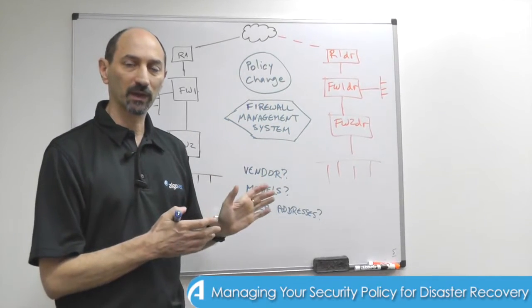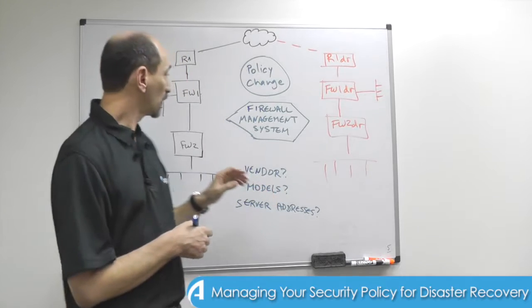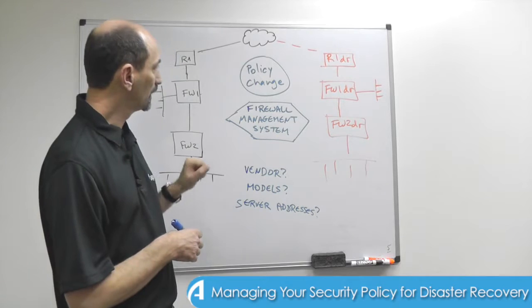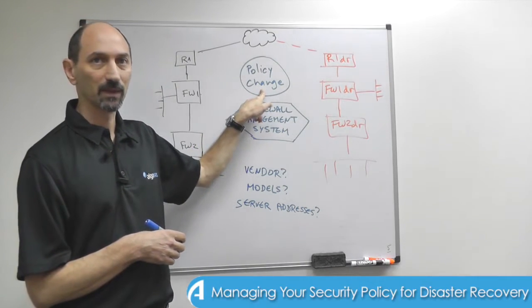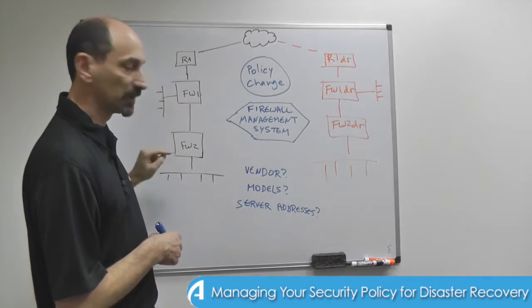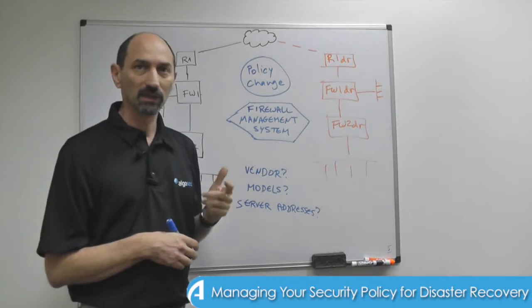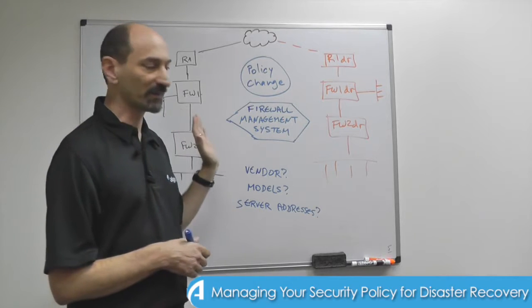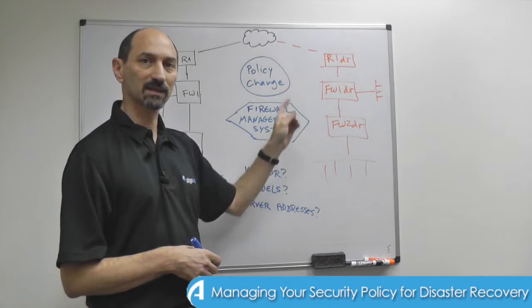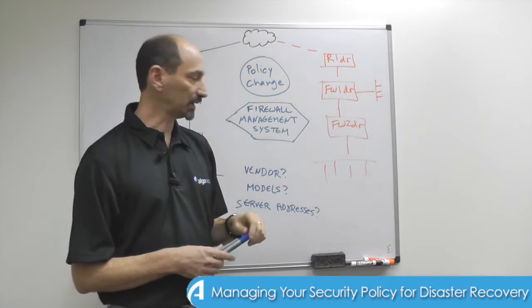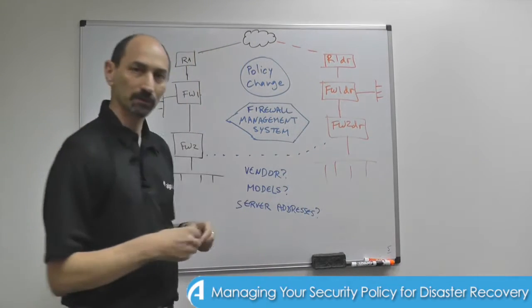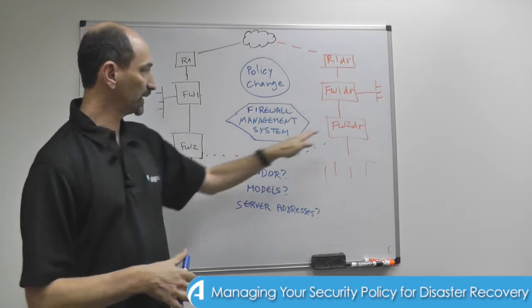But just putting together the equipment is not enough, because all of these devices have security policy in them, and policy changes. Whenever you make a change to the security policies in the primary site, you need to make sure that an equivalent or matching change is made to the policies of the matching devices in the DR site. You somehow need to create a linkage between the siblings on both sides, between the primary and the DR.